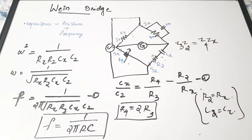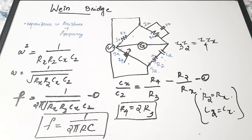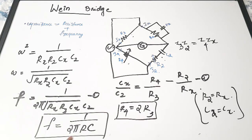To summarize, the Wien Bridge is used for finding capacitance in terms of resistance and frequency. The two key equations are the frequency relation and the component ratio relation — these are very important, especially for numerical questions in competitive examinations. When R2 = Rx and C2 = Cx, the frequency becomes 1/(2πRC) and R4 = 2R3. Understanding the Wien Bridge circuit and these equations is also essential for studying the Wien Bridge oscillator.